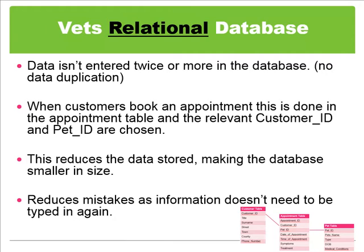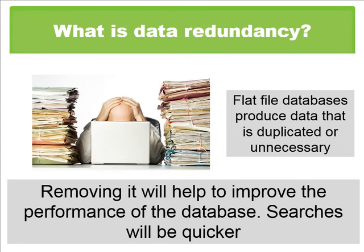It also reduces mistakes, because once you put the information about the pet and the customer in one time, you're unlikely to need to change that unless they move or the pet dies. So that information will stay there all the time and won't be altered, so it will always be accurate. The main thing this does is reduce something called data redundancy. Data redundancy removes data that is unnecessary, and this makes our database run a lot smoother.